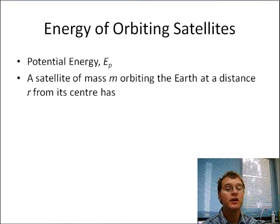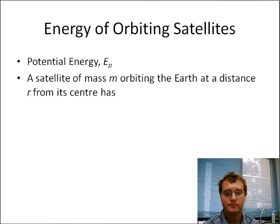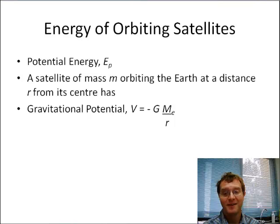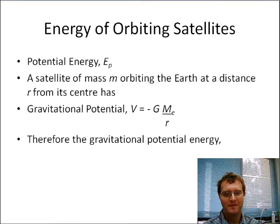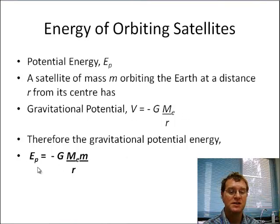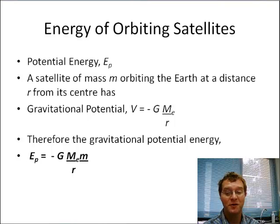It could equally be a planet which is acting as a satellite around the sun. The gravitational potential we know is going to be −G×M_Earth divided by the radius of this orbit. That means that the gravitational potential energy is going to be the gravitational potential multiplied by the mass of the object: −G×M_Earth×m divided by the radius of the orbit.